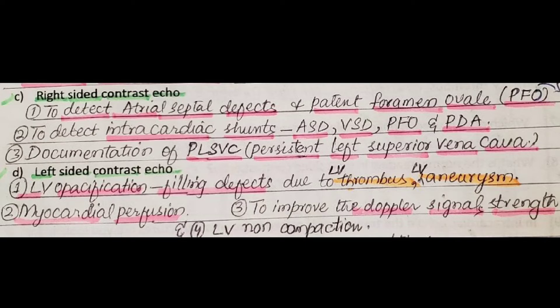It is also used for the documentation of PLSVC (persistent left superior vena cava). The left-sided contrast echo is used for LV opacification, filling defects due to LV thrombus and LV aneurysm, myocardial perfusion, improving Doppler signal strength, and for LV non-compaction.